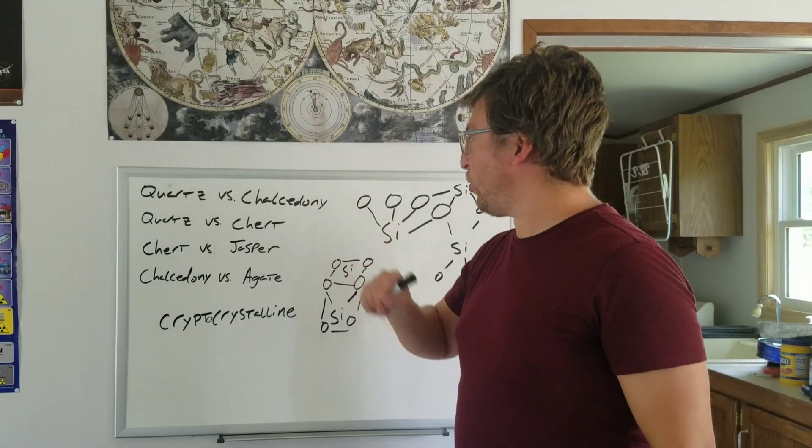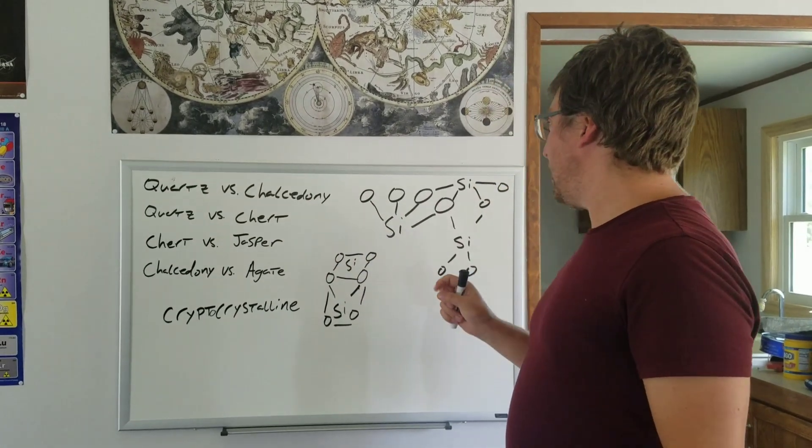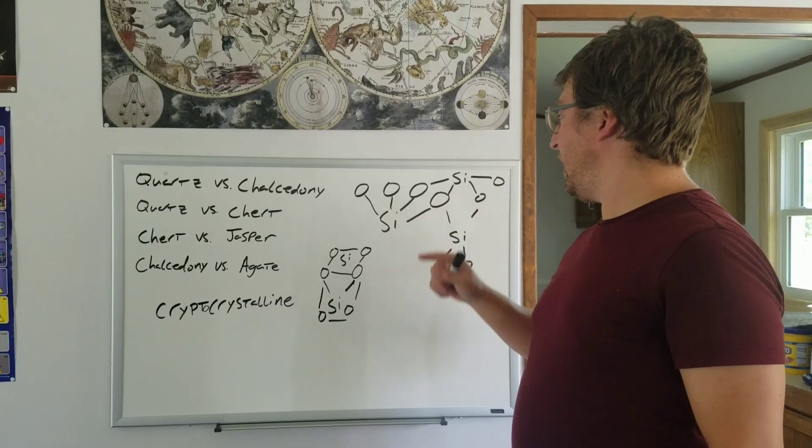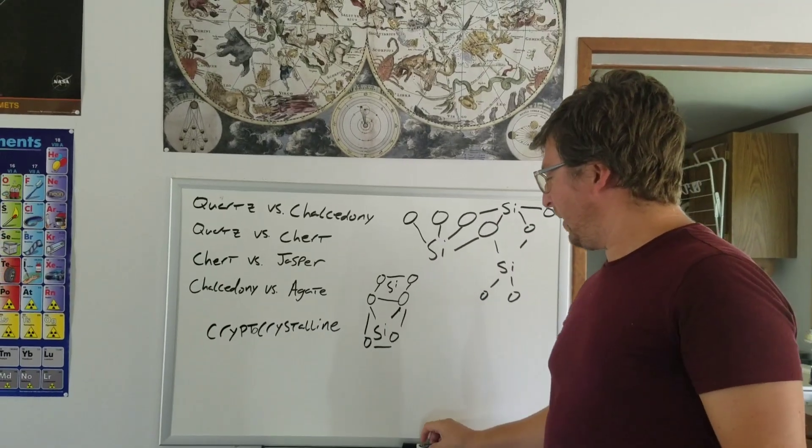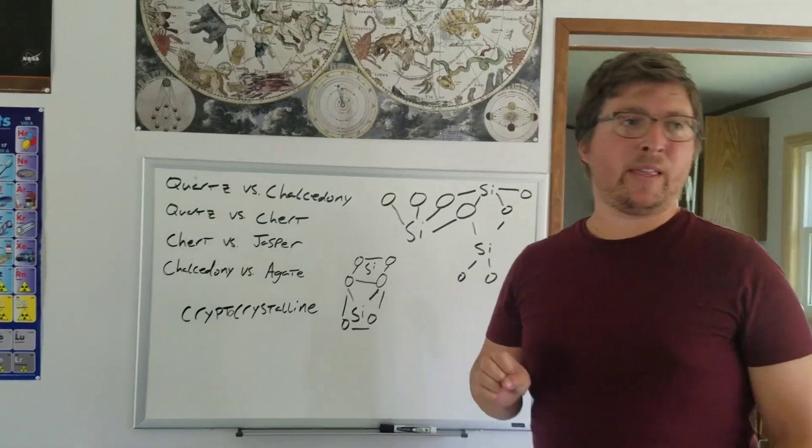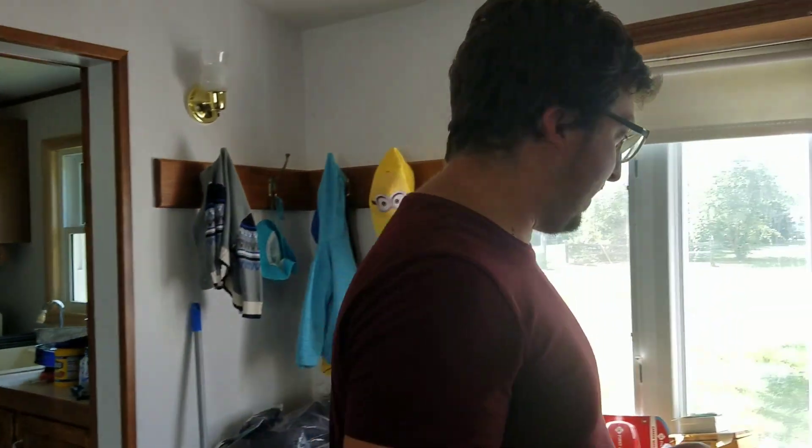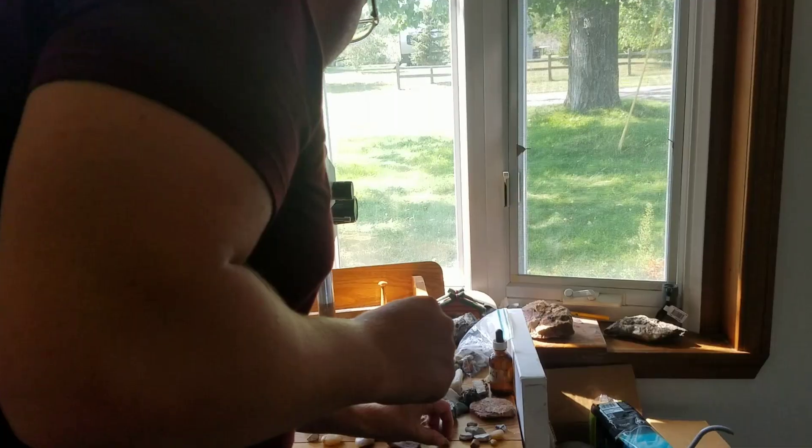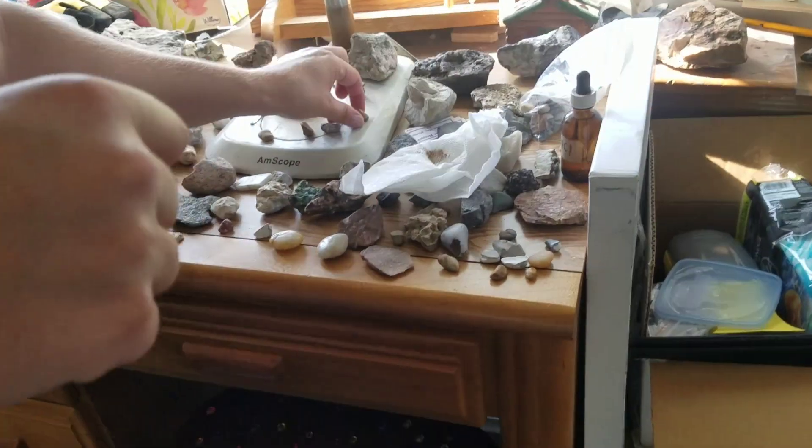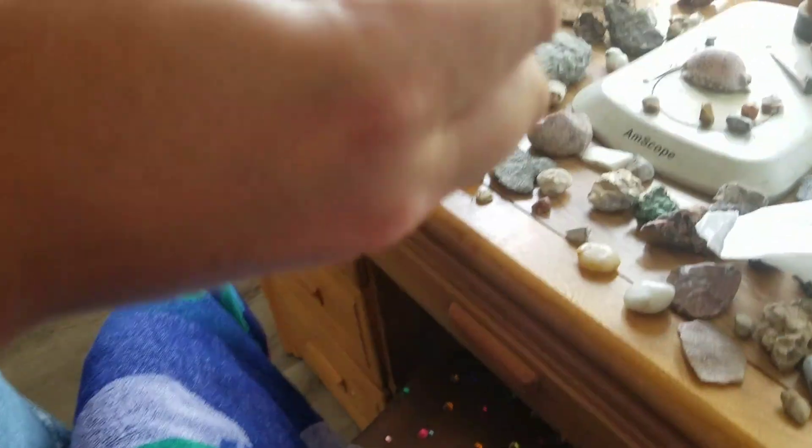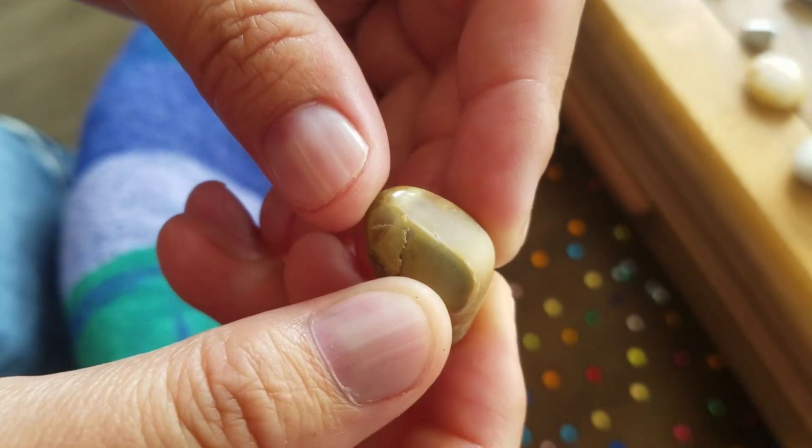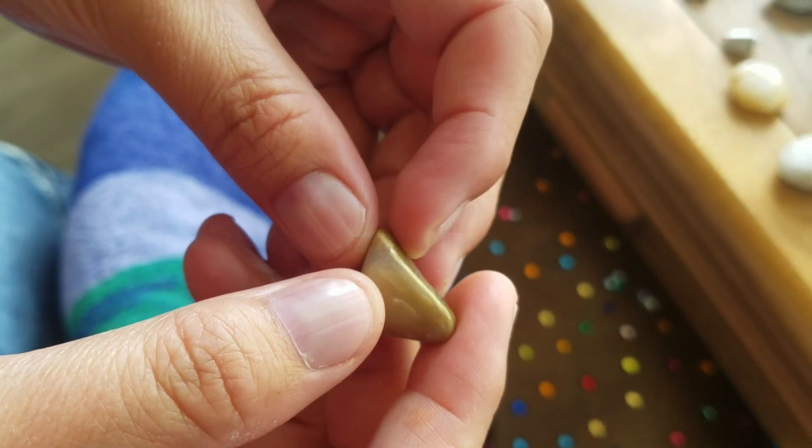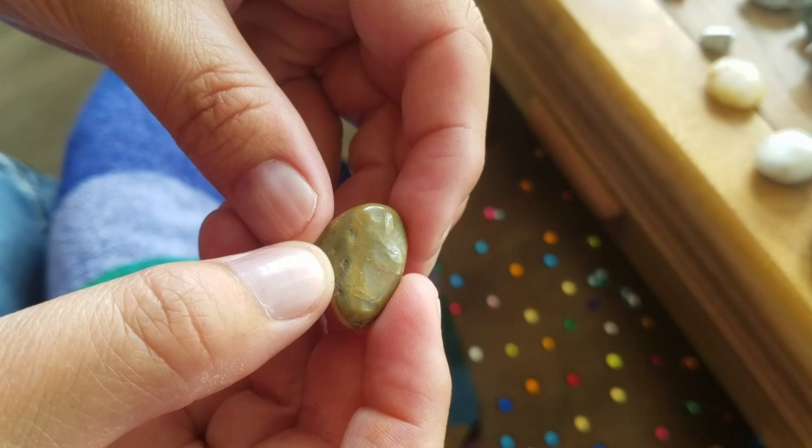Chalcedony is a cryptocrystalline mixture of quartz and mogunite here. And what you end up with is instead of a nice, really clear crystal, you end up with these kind of milky, but very smooth, waxy minerals.